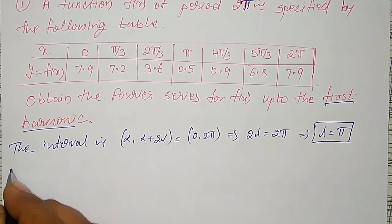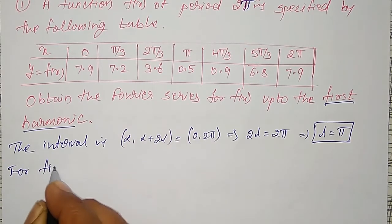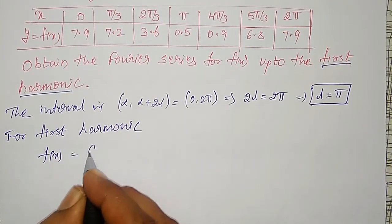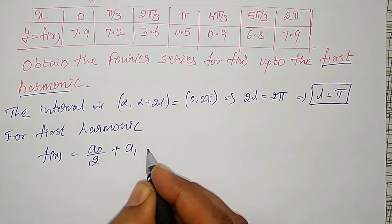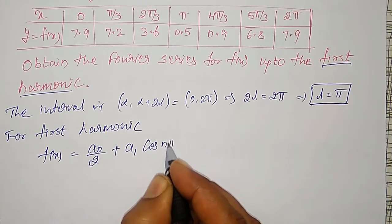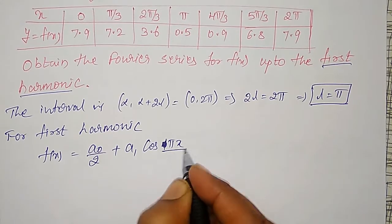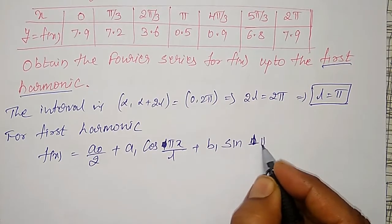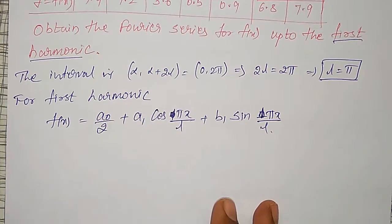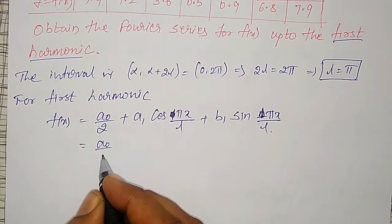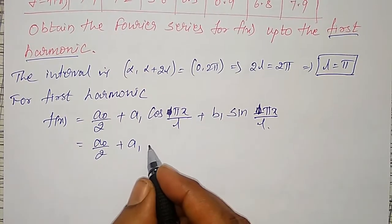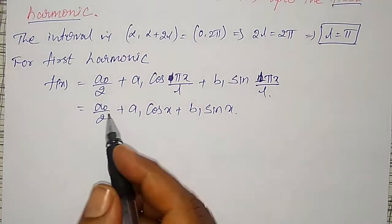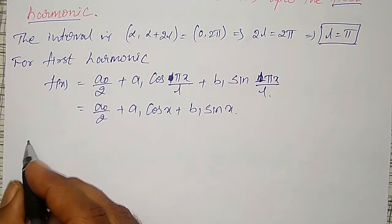Then, for first harmonic, f(x) is given by a_naught divided by 2 plus a1 into cos(nπx/l), n is 1 here, divided by l, plus b1 into sin(nπx/l), n is 1 again. Let me substitute l here. That is a_naught divided by 2 plus a1, l equal to π, π cancels, this is cos x plus b1 into sin x. Now I have to find out a_naught, a1 and b1.